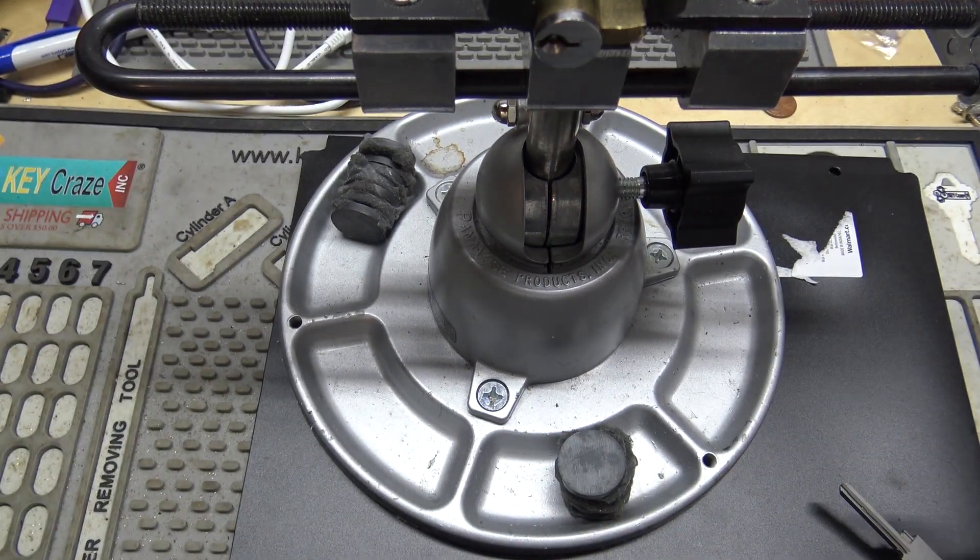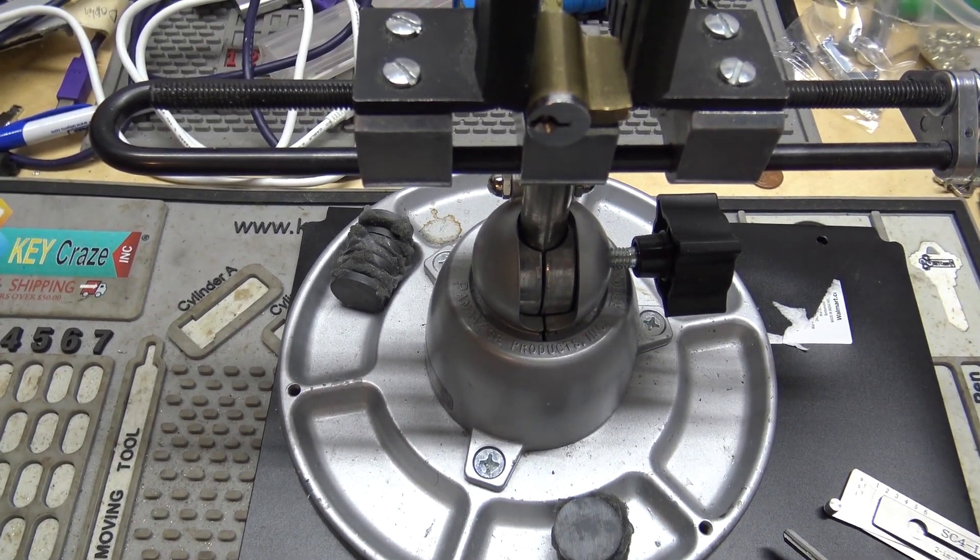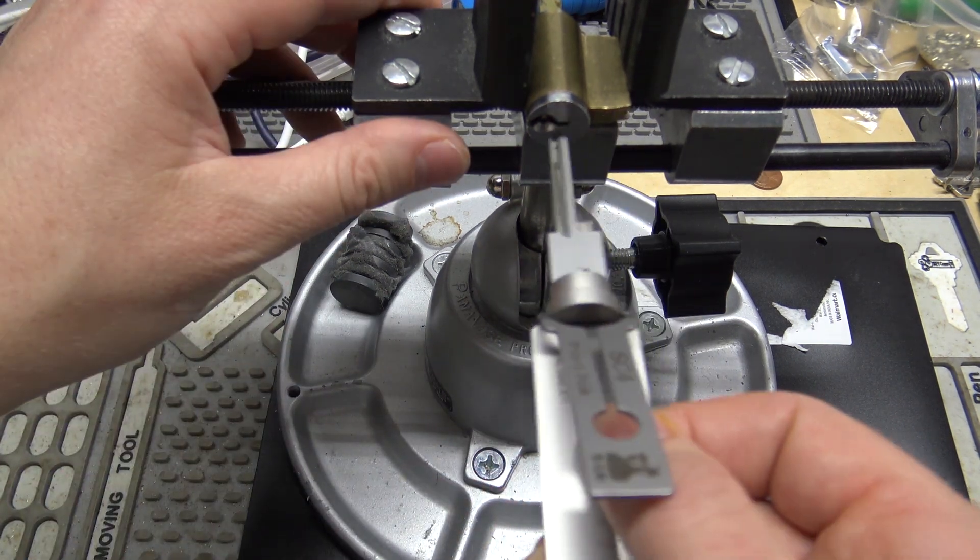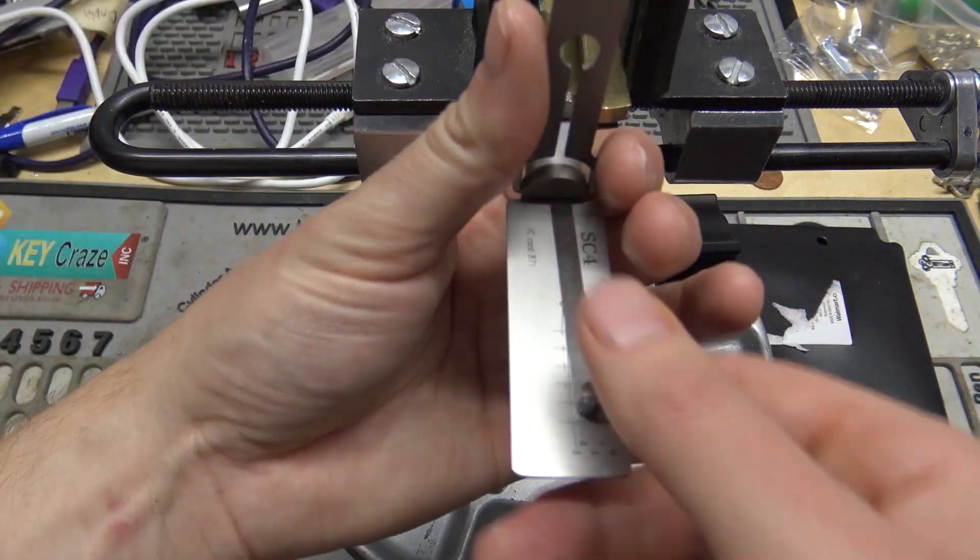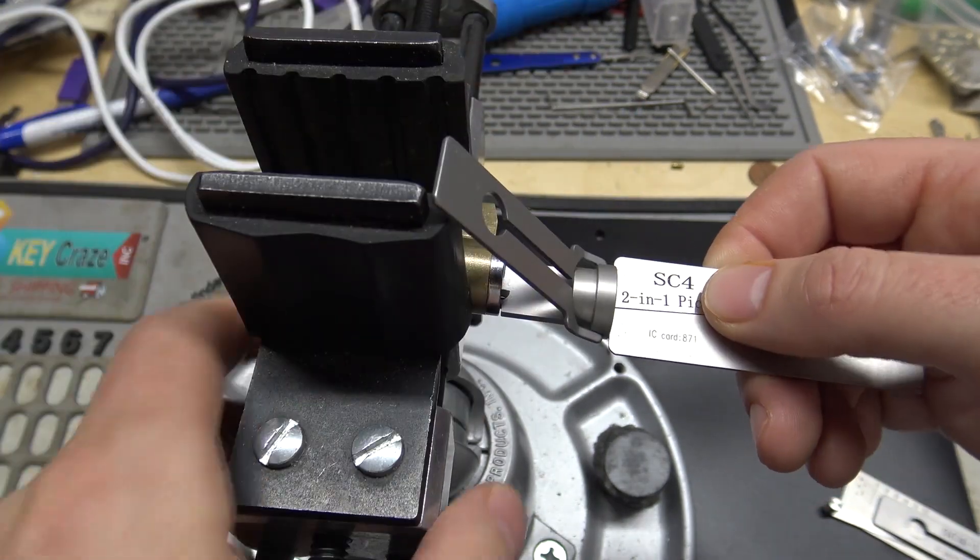So basically what your problem would be here, we have a KiK cylinder set up in the vice here. This would be on a right-handed door. And you'd use the regular SC4 Lishi tool in, and you can actually see what you're doing. You can see the Lishi. Good to go.